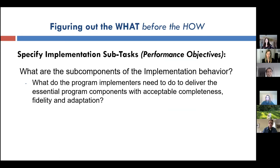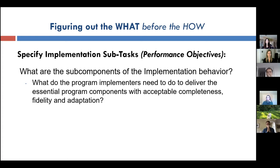One thing that's different about implementation mapping compared to how people sometimes plan implementation strategies is a real focus on figuring out the 'what' before the 'how.' For example, it seems obvious to ask who has to do what to implement this evidence-based program — but that doesn't always happen. Implementation mapping forces you to articulate the subcomponents of implementation behavior: what do program implementers need to deliver this program with acceptable completeness, fidelity, and adaptation?